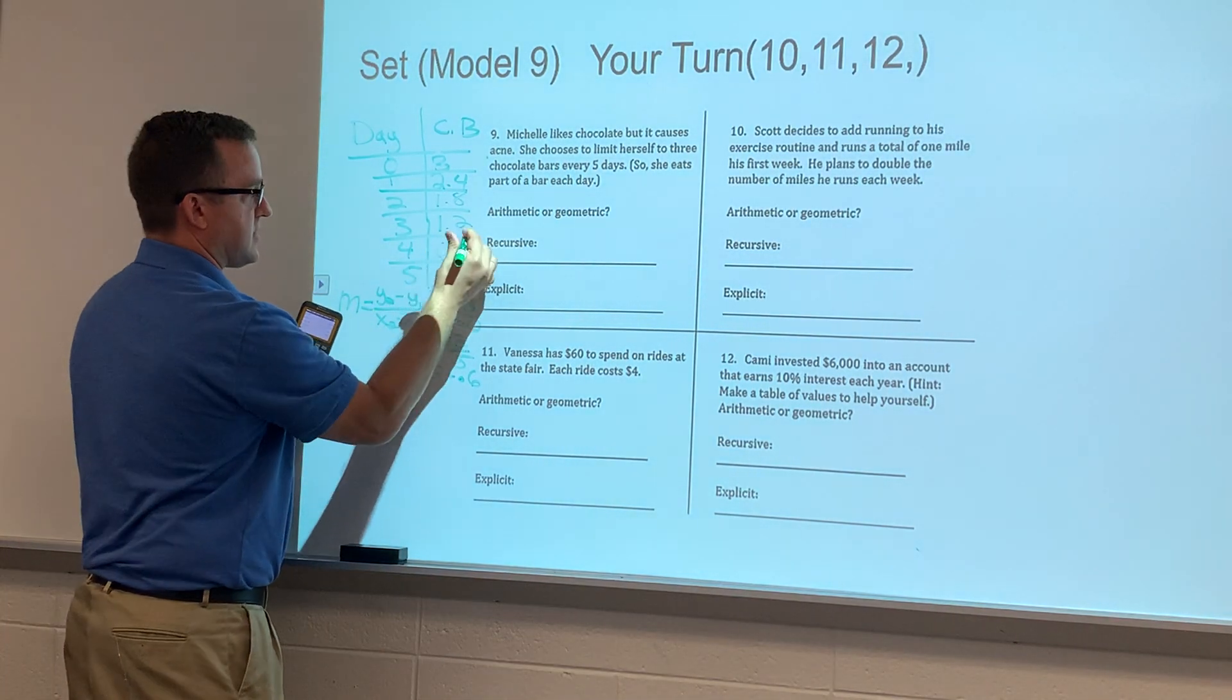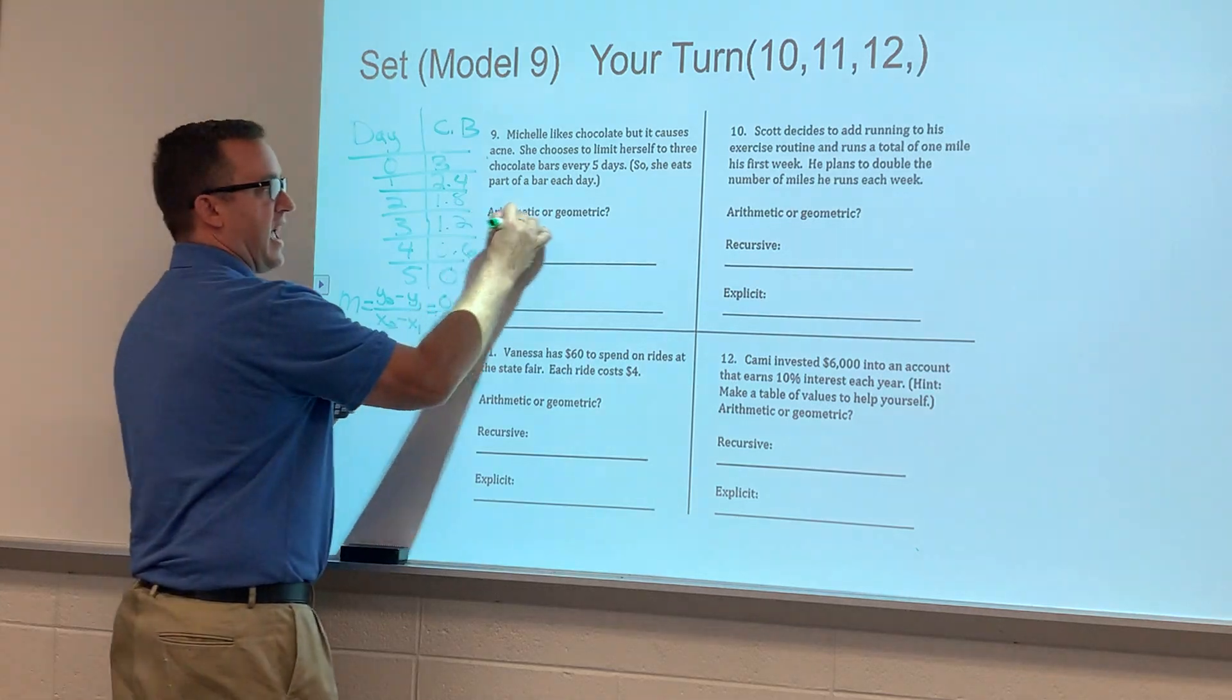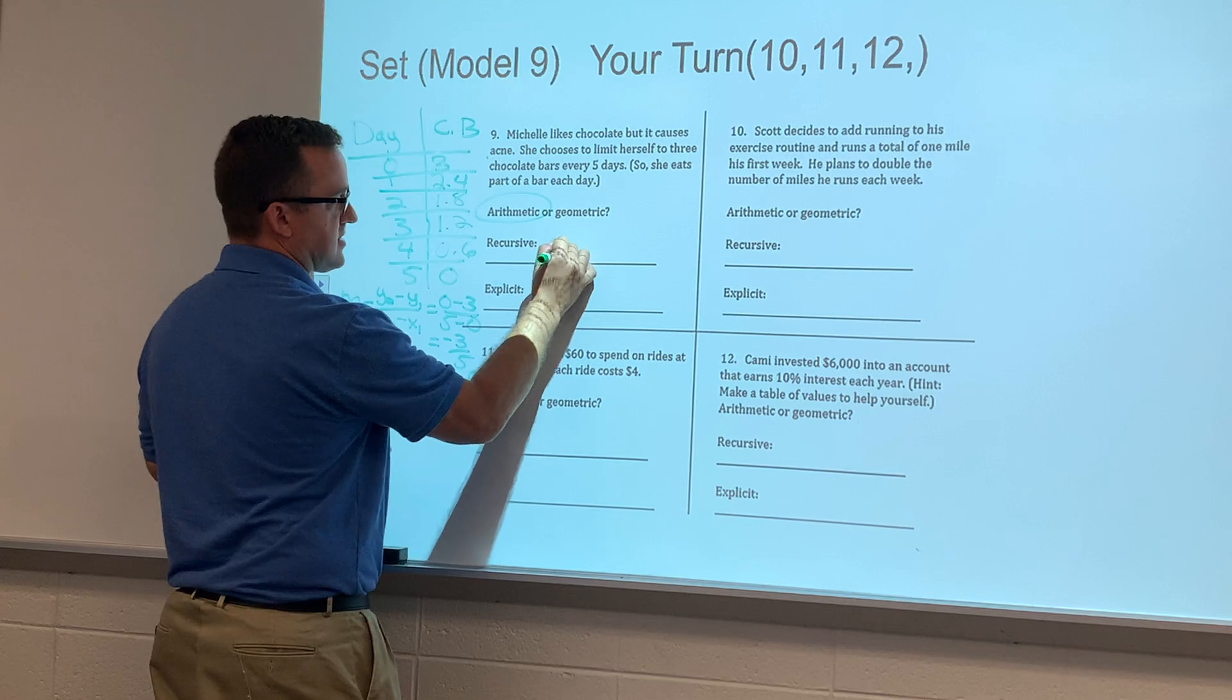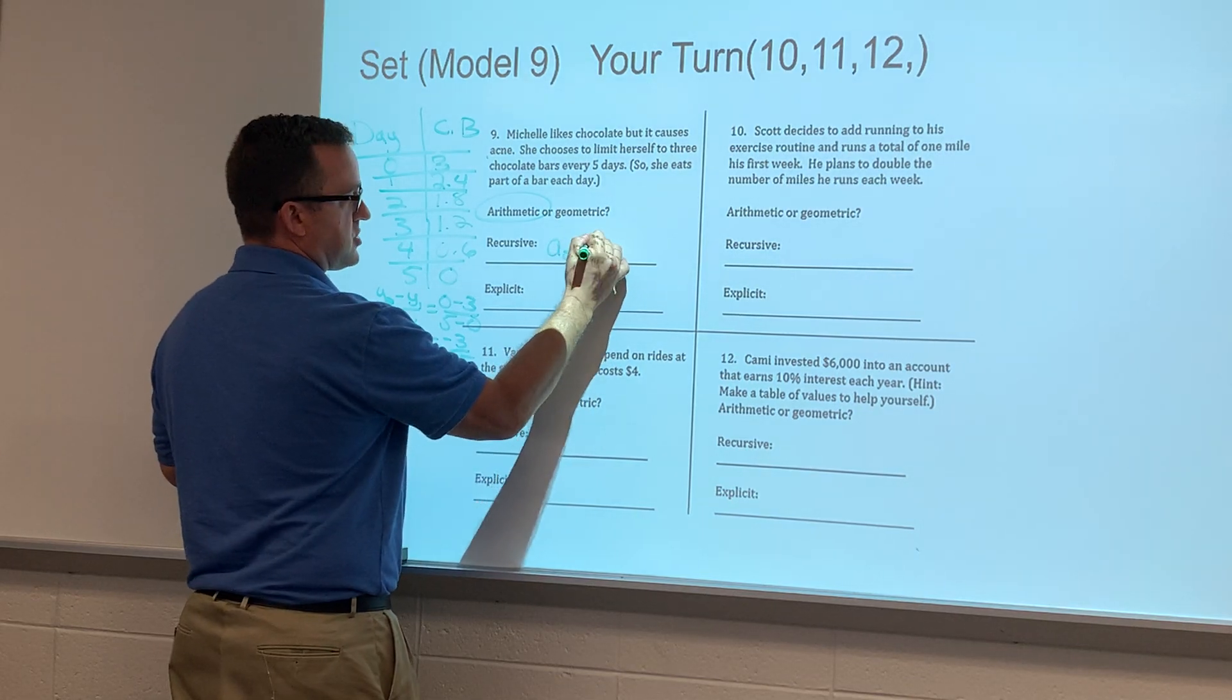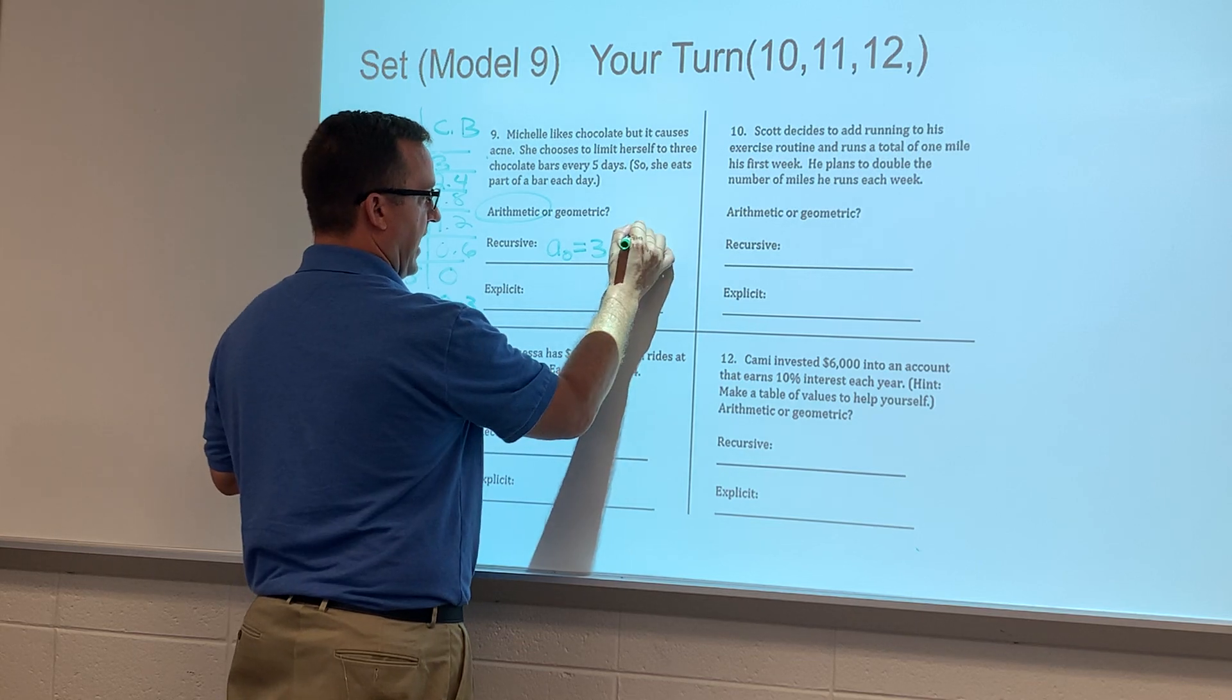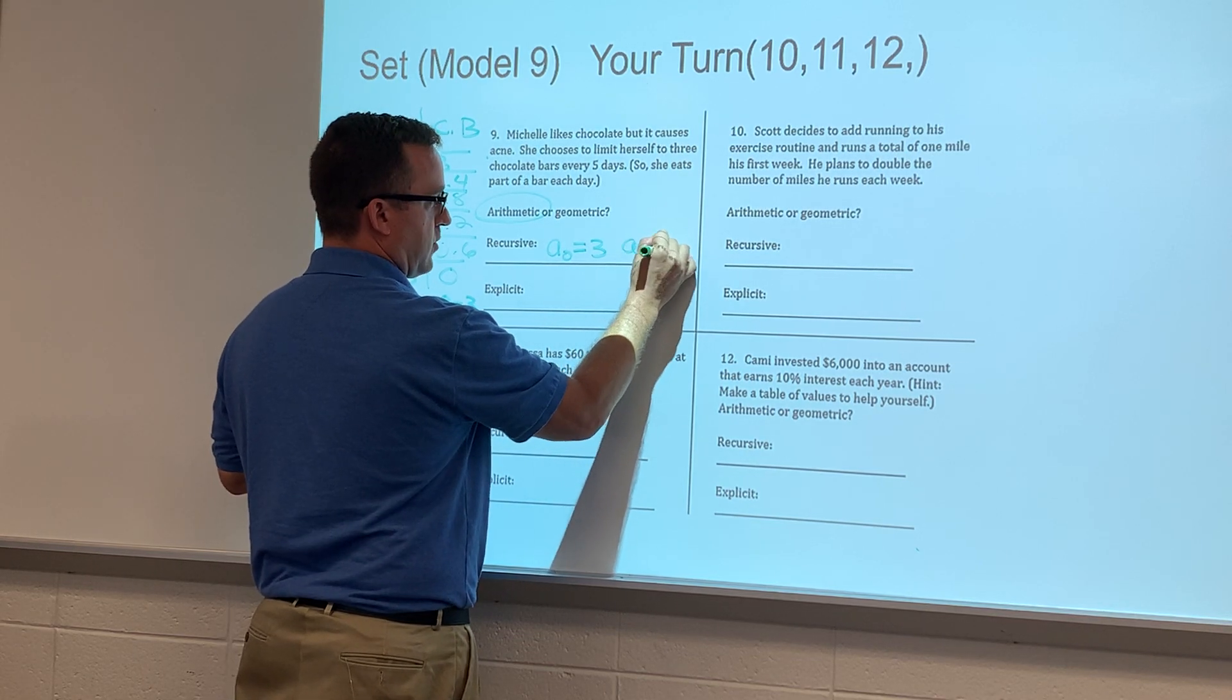So this is an arithmetic series. To get my recursive formula, we would just say a sub zero, at the start she has three candy bars, and then a sub n equals a sub n minus one, and then we're eating 0.6 of a candy bar, so minus 0.6.